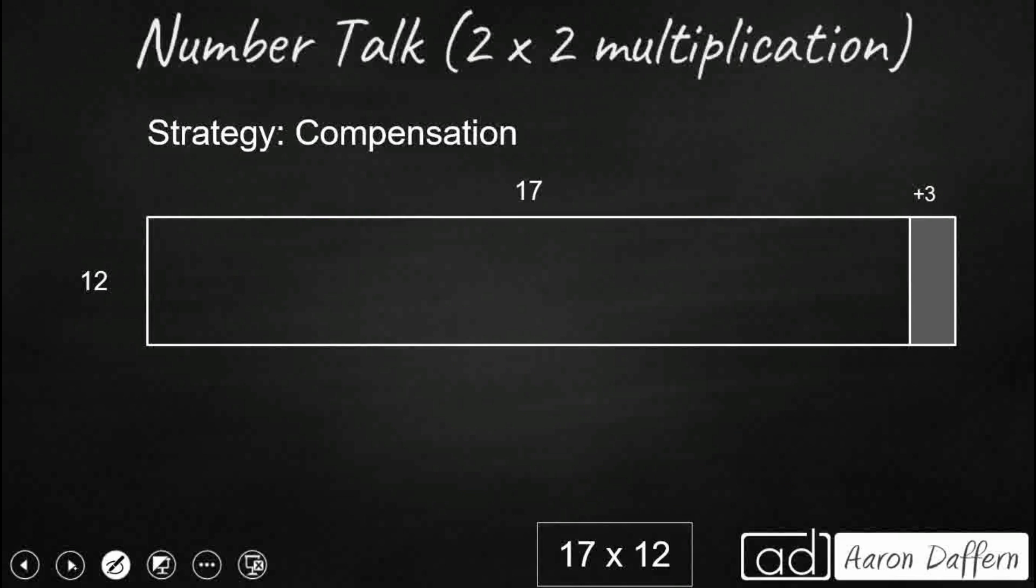Compensation is one that can be useful when it's close to an easier number to multiply by. So let's take our 17 times 12, and let's reimagine the 17. We're going to add 3. So we're going to really look at it as 20. Well, 20 times 12, that'd be easy.